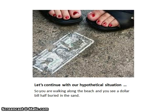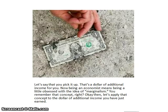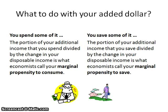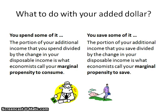Let's continue with our hypothetical situation. Let's say we're walking along a beach and you see a dollar half buried in the sand — you pick it up. That's an additional dollar of income for you. Being an economist means being a little obsessed with marginalism. Let's apply that concept to the dollar of additional income you just earned. If you're John Maynard Keynes, you're going to save some of it and spend some of it. The portion of your additional income that you spent, divided by the change in your disposable income, is your marginal propensity to consume. The proportion that you saved, divided by the change in disposable income, is your marginal propensity to save.